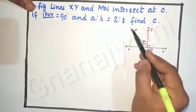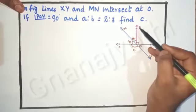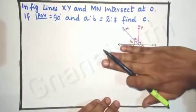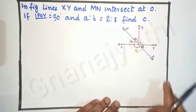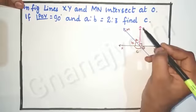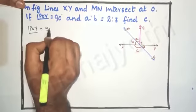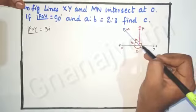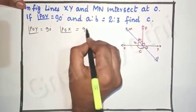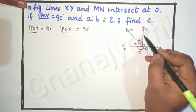So XY and MN are the two lines meeting at O, and here angle POY is equal to 90 degrees. If I close this, you can see supplementary angles. Now let us write what data are present here: angle POY is equal to 90 degrees. Similarly, angle POX is also equal to 90 degrees.